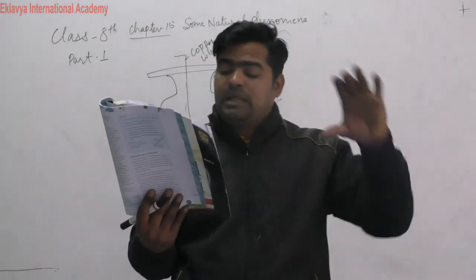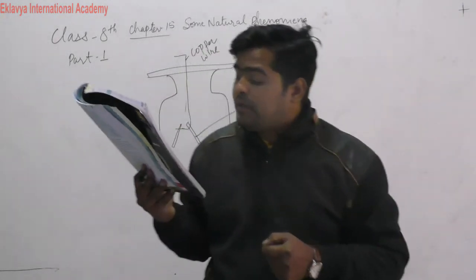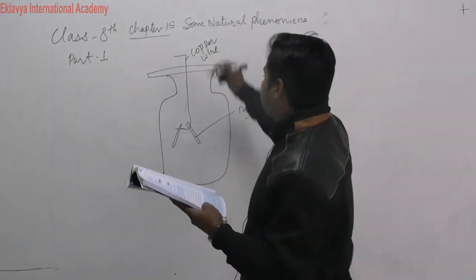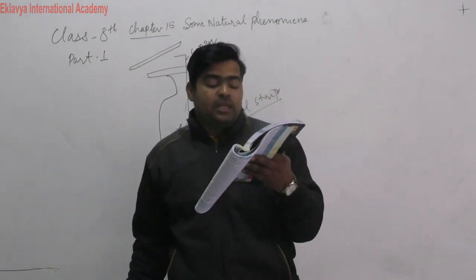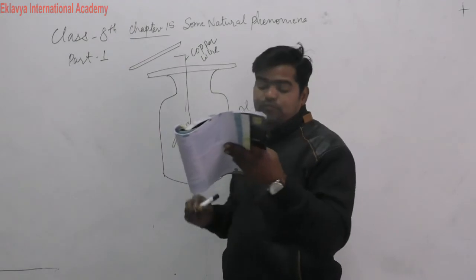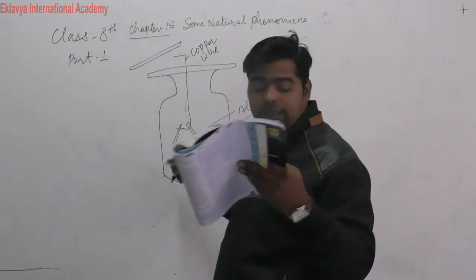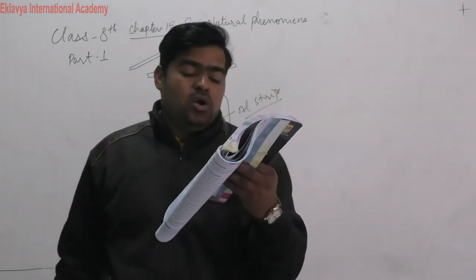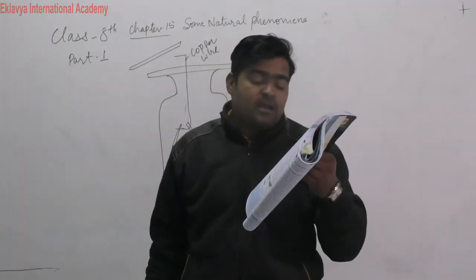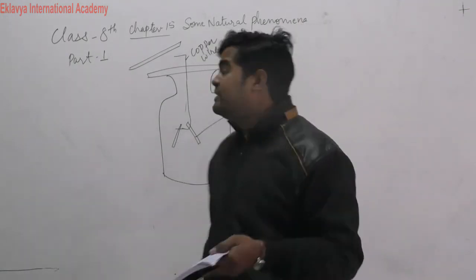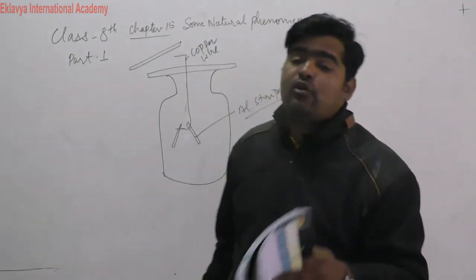Take a plastic ruler and bring it closer to the electroscope. You will not observe any movement in the aluminum strips. Now rub the plastic ruler on your dry hair. Then again bring it closer to the electroscope. This time you will observe that the aluminum strips move away from each other.